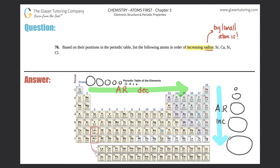They gave us four atoms, so let's circle their positions. Strontium is over here, calcium is right above strontium, silicon is over here, and chlorine is over here. It doesn't really matter whether you start with periods or groups. The first thing to note is we need the order of increasing radius — so the smallest radius goes on the left-hand side, and the largest goes on the right.